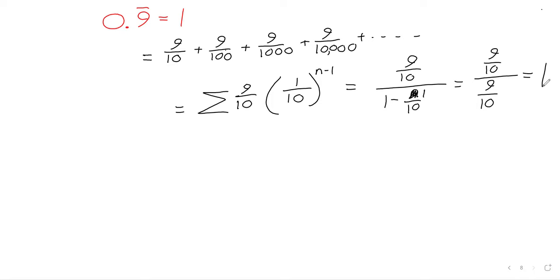But in order for 0.9 repeating not to equal one, you really have to just reject limits. And by rejecting limits, you pretty much have to reject all of calculus. So if you're really determined that 0.9 repeating ought to be something other than one, I hope you're getting something so valuable that it's worth just dismissing the entire field of calculus. And somehow I think most of the people who go to Wikipedia and fight about this are not going to revolutionize mathematics. It's just a hunch I have.